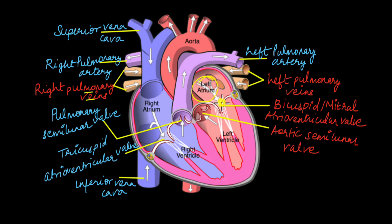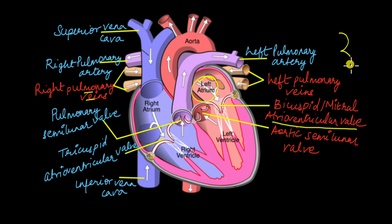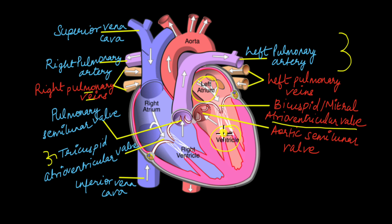From the left atrium, blood is pushed past the valve known as the bicuspid valve, or the mitral valve, or the bicuspid atrioventricular valve. It is called bicuspid because it is made up of two flaps, unlike the tricuspid which had three flaps. It is called atrioventricular again because it is located between the atrium and the ventricle. Past this bicuspid valve, blood enters the left ventricle.